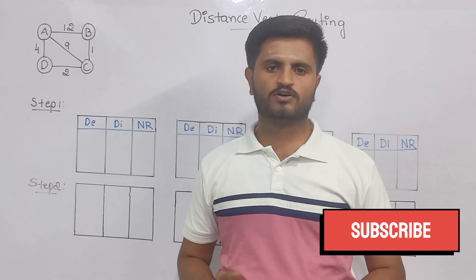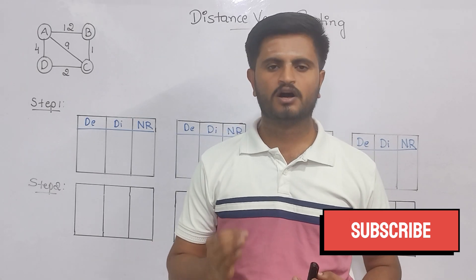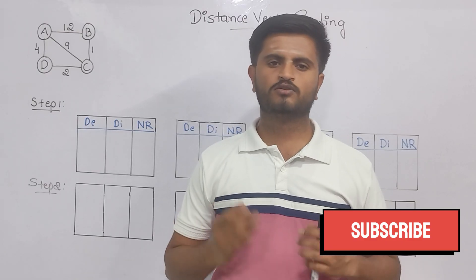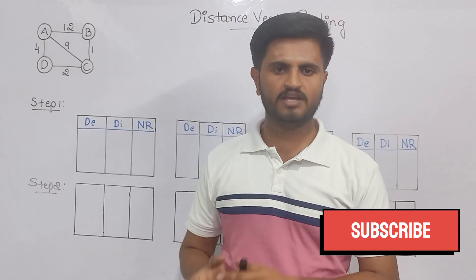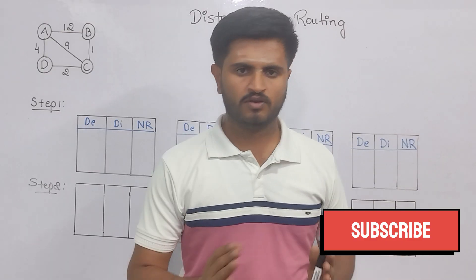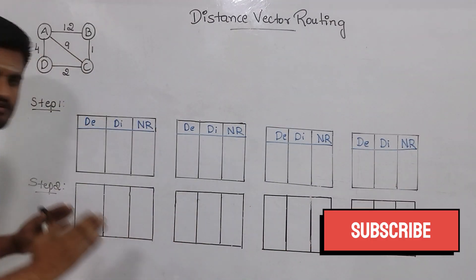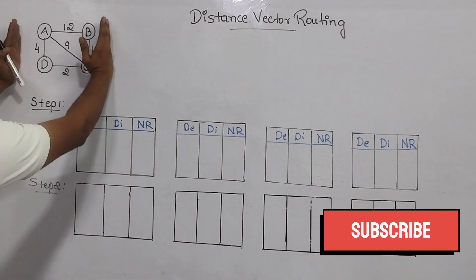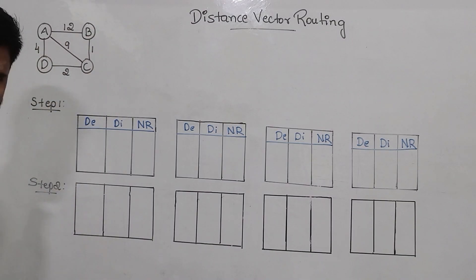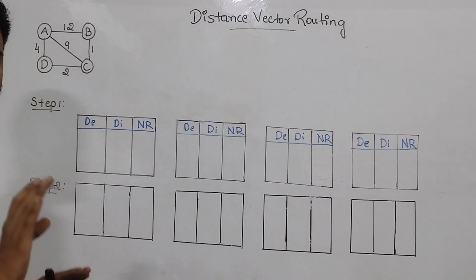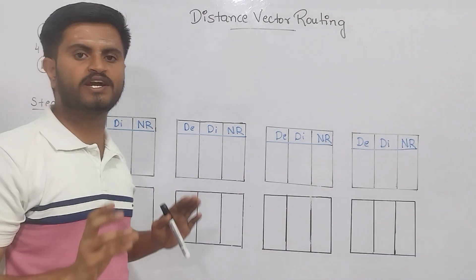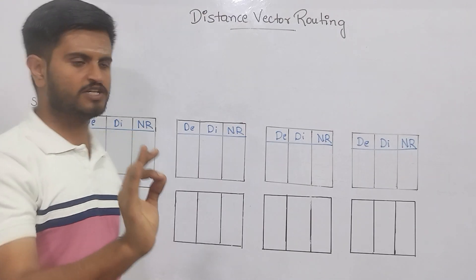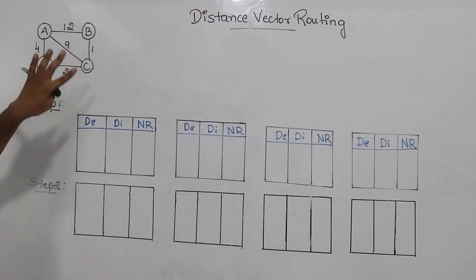Hello everyone. In this video let's discuss how easily we can solve the distance vector routing algorithm, or you can call it the dynamic routing problem. We will be solving this in two steps. There will be a given graph or tree, and we will be solving the problem to get the shortest path — to find the shortest path from the source to all other nodes.